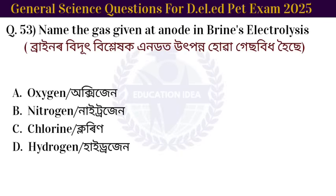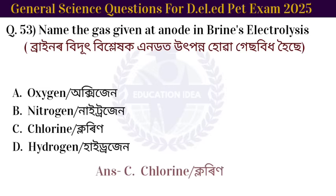Next question: name the gas given off at the anode in the electrolysis of brine. The answer is chlorine.